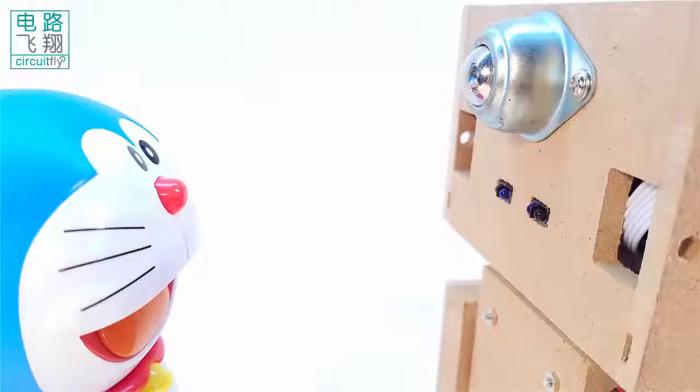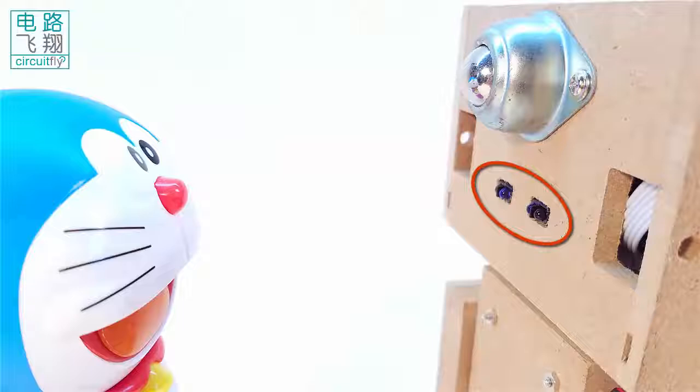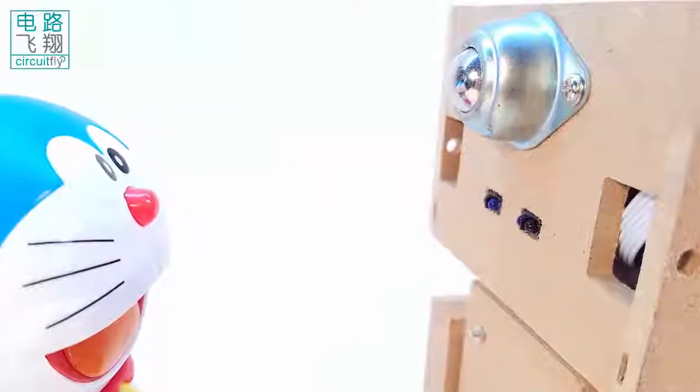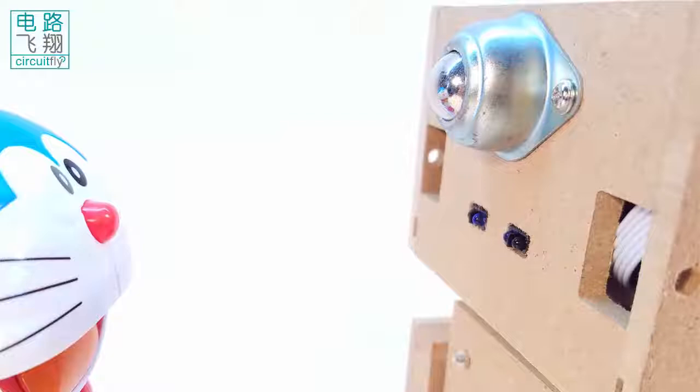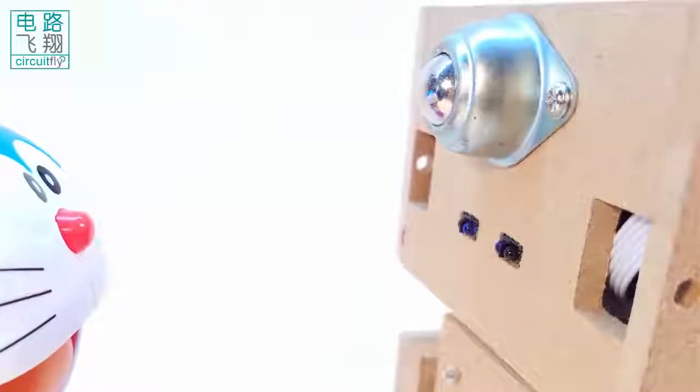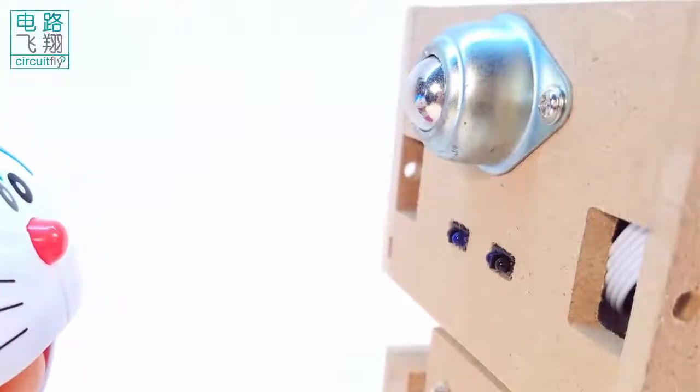Clibos C6 后脑勺在 Clibos C6 后脑勺，装有两个红外传感器，型号为TCRT5000. There are two infrared sensors located at the backside of Clibos C6's head. The model is TCRT5000.